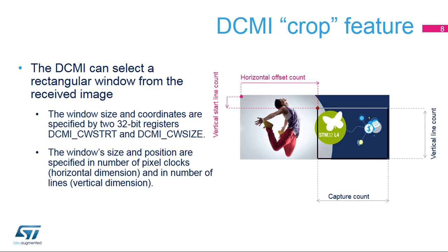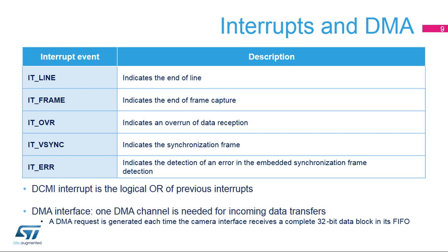Cropping is another way to reduce the image size, in addition to reducing the pixel resolution as mentioned previously. This option is valid for both single frame capture and continuous mode, but it does not support JPEG format. Five interrupts can be generated, and all interrupts are maskable by software. The global interrupt is the OR of all single interrupts. A DMA request is generated each time the camera interface receives a complete 32-bit data block in its FIFO. For DMA channels available to DCMI, please refer to the DMA section in the STM32L4 Reference Manual.